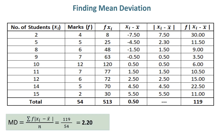Finding mean deviation. The numerator value for finding mean deviation is 119 and the denominator value is 54. Thus, the mean deviation in this example is 2.20.